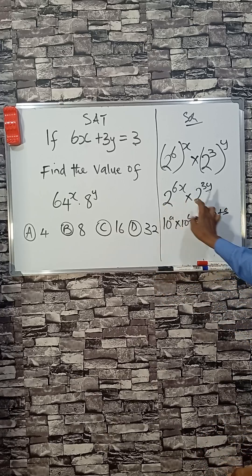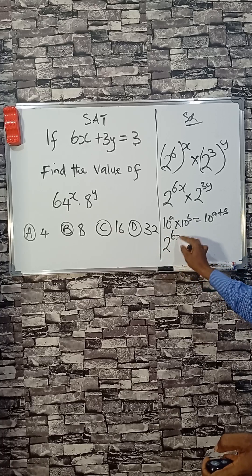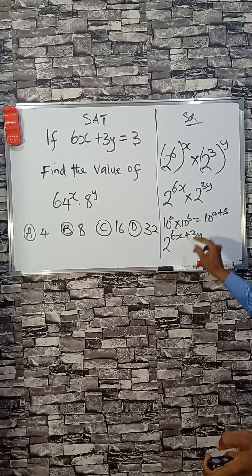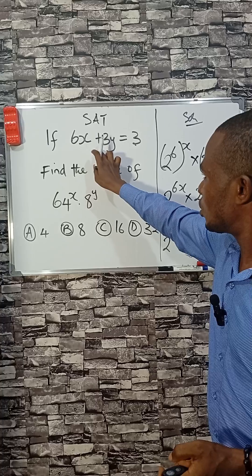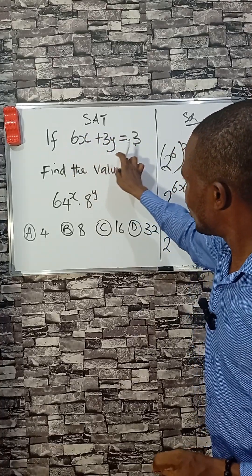So since I have the same base, we can apply this law to have 2 raised to the power 6x plus 3y. Let's check—the equation says that 6x + 3y equals 3. That means where you find 6x plus 3y...